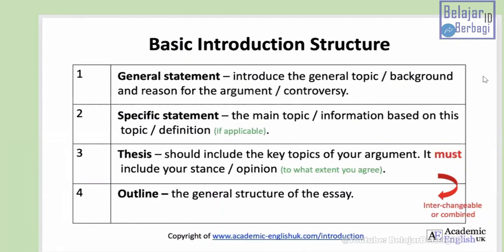If you need to give a definition, if it's applicable, you can provide it at this stage. If not, you can move on to the next stage, which would be your thesis statement. This should include the key topics of your argument, your stance — your position, your idea, and your opinion — and to what extent you agree. You could end with the outline, which is the general structure of the essay. The arrow indicates these are interchangeable or combinable: you could give your outline then your thesis, or vice versa, or combine the two.